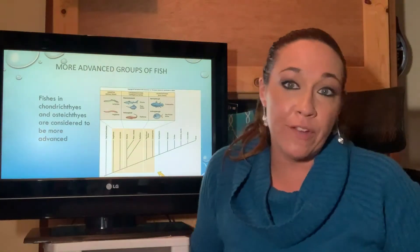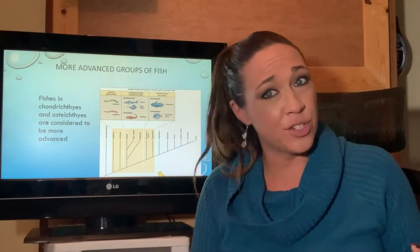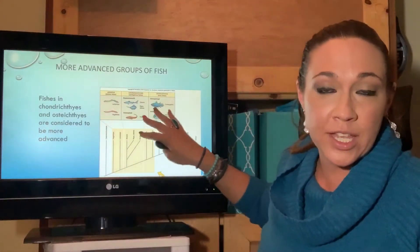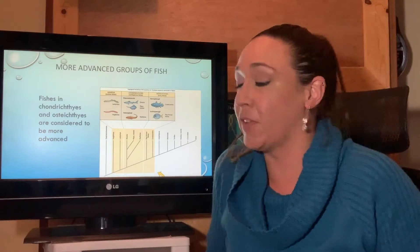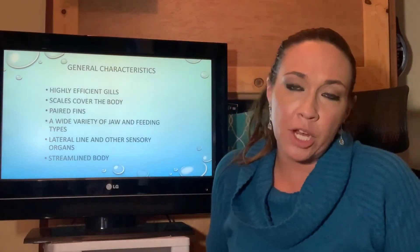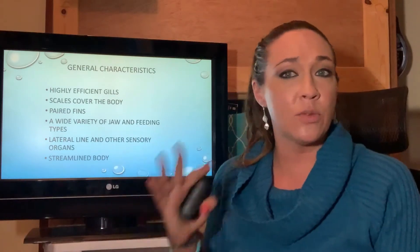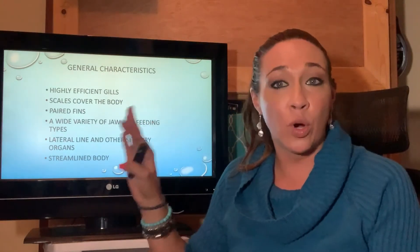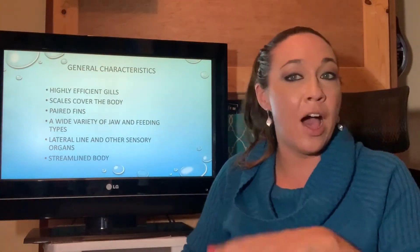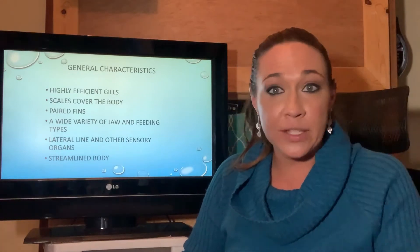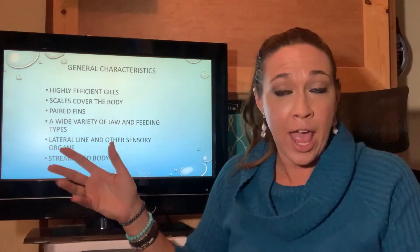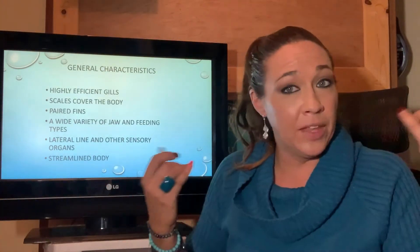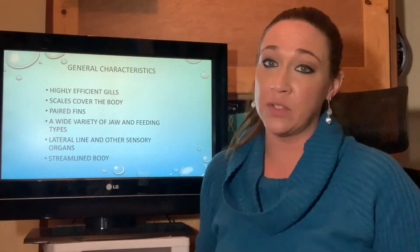Now we move to more advanced fish groups. The Agnathans were the first fishes; through evolution we now arrive at the Chondrichthyes and Osteichthyes. All fish from here on share common characteristics. First: a highly efficient set of gills — these fish are larger and need more oxygen, so efficient gills are essential given how little oxygen is dissolved in water.